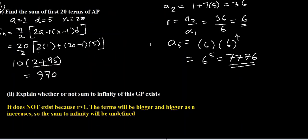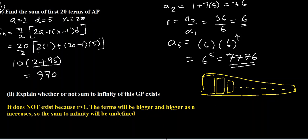In the last part, they're asking explain whether or not the sum to infinity of this GP exists. Sum to infinity exists only for GPs where r is less than 1. If r is less than 1, the first term is followed by smaller and smaller terms, so when we go to infinity, the term is almost non-existent and we can add them without exceeding a specific number. But since here r is 6, if the first term is 6, the second term is 36, and the third term becomes even more. It does not exist because r is greater than 1. The terms will be bigger and bigger as n increases, so the sum to infinity will be undefined.